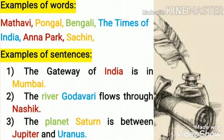Examples of sentences. First one: The Gateway of India is in Mumbai. Second one: The river Godavari flows through Nashik. Third one: The planet Saturn is between Jupiter and Uranus. Here, 'India' signifies a common noun and 'Mumbai' refers to a proper noun.